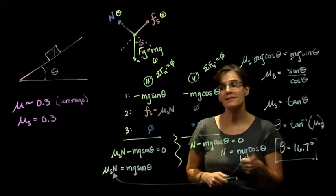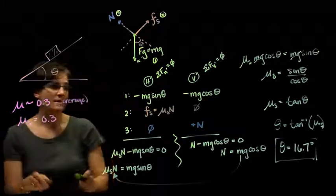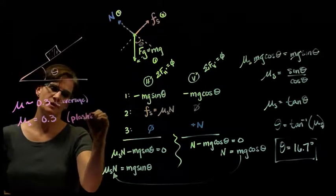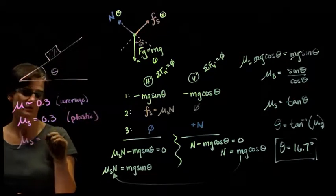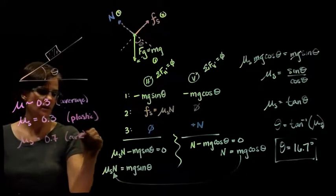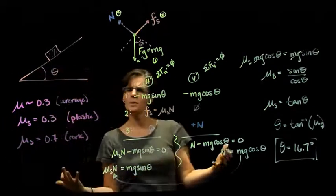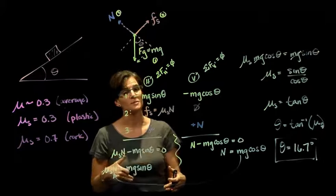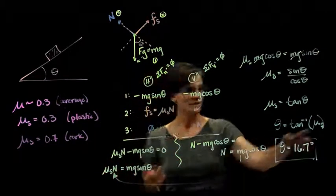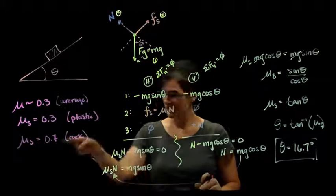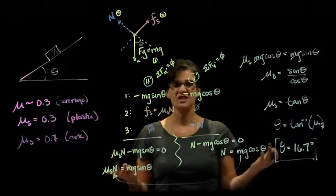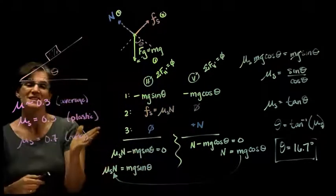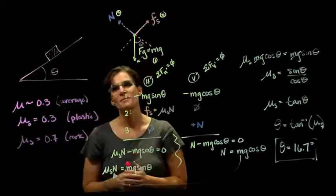Now, as I increase my coefficient, so the cork, so this was plastic, I was told that the cork had a coefficient around 0.7. Would I expect to get a steeper angle or a shallower angle? Does the cork last longer as I lift it up and up and up with a higher coefficient or will it start to slide sooner? Well, it should probably last a little longer. So, if my inverse tangent is of 0.7, my angle turns into 35 degrees. So, the more frictional force, the higher the coefficient, the steeper the angle I can make before that block starts to slide.